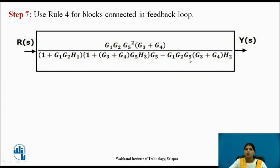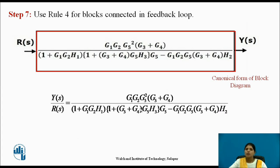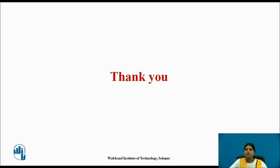We get the output, and this is the canonical form of the given block diagram. To calculate the transfer function of this system, write Y(S) divided by R(S) equal to the result. This is the transfer function of that block. In this way we reduce the block diagram and calculate the transfer function of the system. These are the references of this video lecture. Thank you.